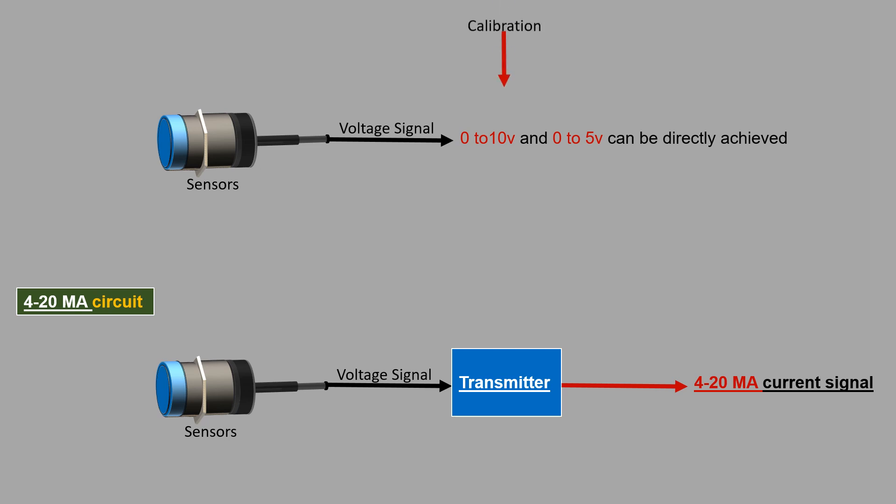The calibration of this transmitter then sets the range of current signal to be generated. When this current signal reaches the controller, they must be usually converted back into a voltage signal for processing.